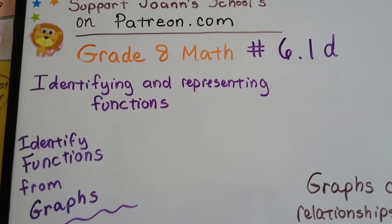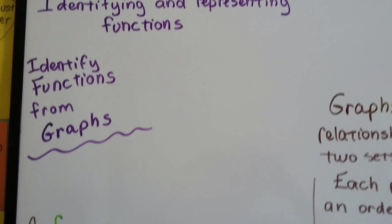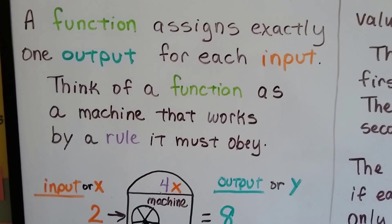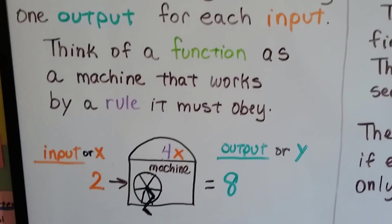Grade 8 math number 6.1d identify functions from graphs. Well, as we've said in the last few videos, a function assigns exactly one output for each input.